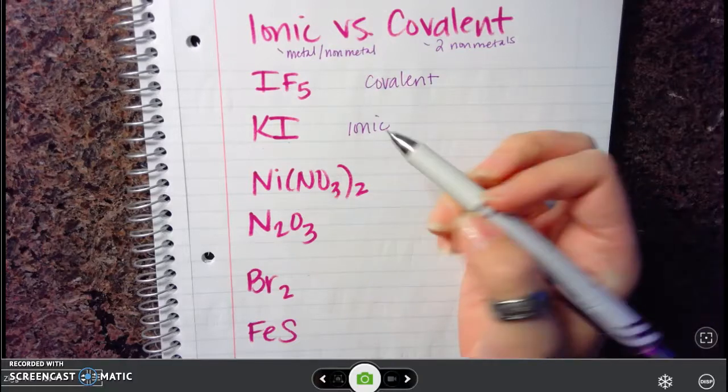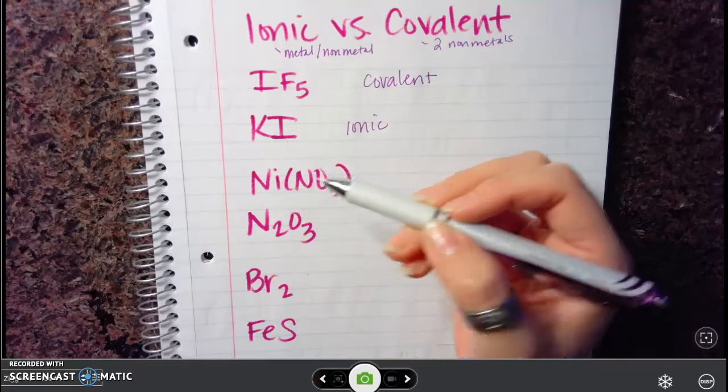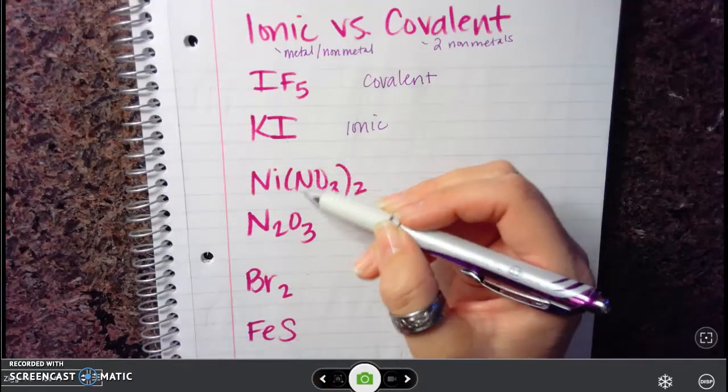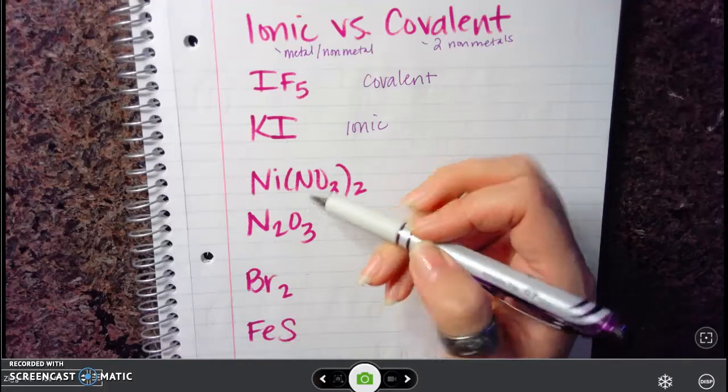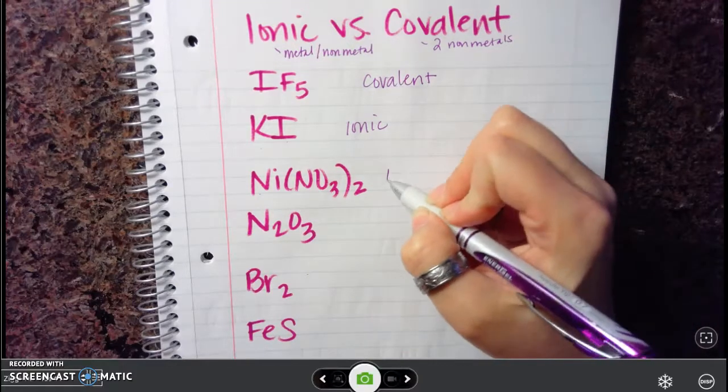Nickel in this next one. We've got nickel has a positive charge, it's a cation or it's a metal. You can think about it that way. NO3 is a negative charge, this is acting like your non-metal. So because we have a cation and anion, or a metal first, this one is ionic.